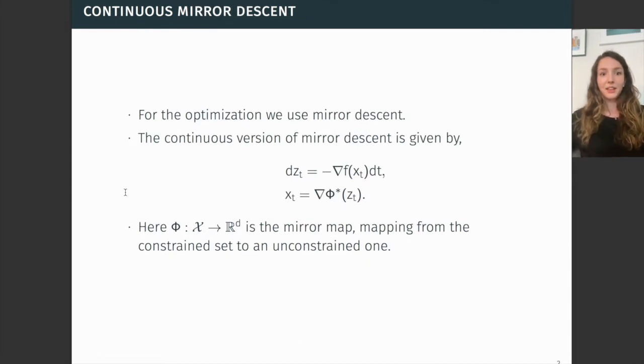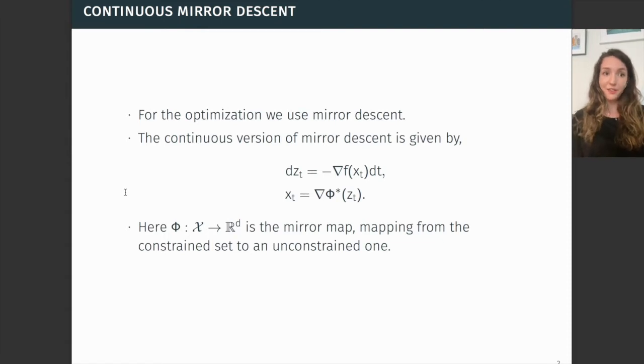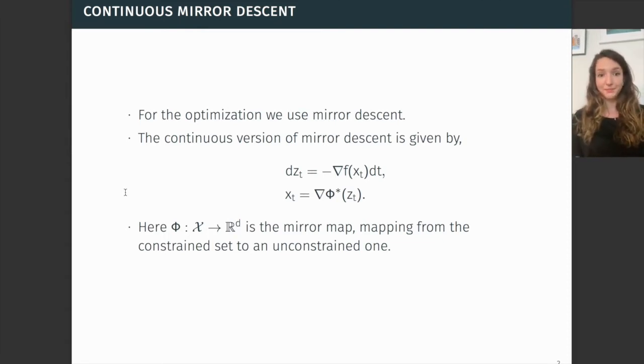In continuous time, mirror descent is given as follows, where our variable z is updated using the gradient of f, and z is then projected back into our constraint set using the mirror map phi.